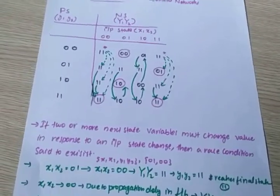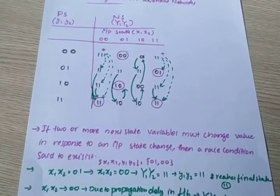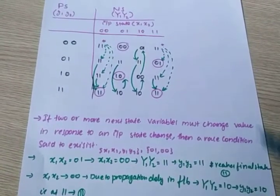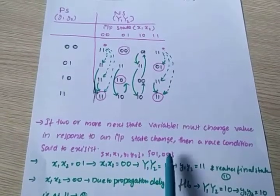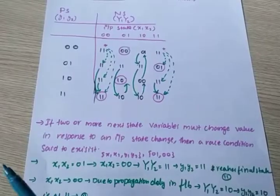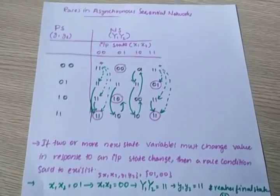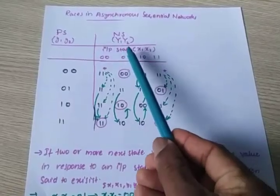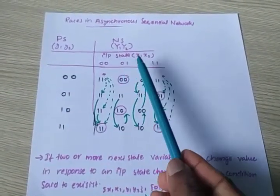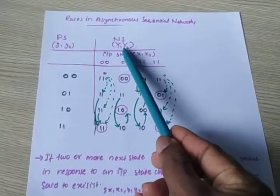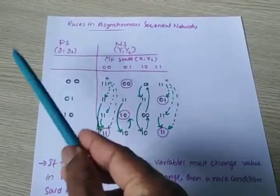For example, consider the condition x1, x2, y1, y2 = 0, 1, 0, 0. Here x1, x2 is the input, capital Y1, Y2 is the next state, and small y1, y2 is the present state.